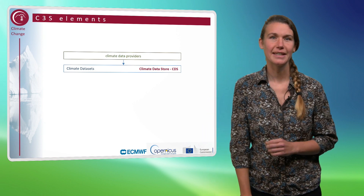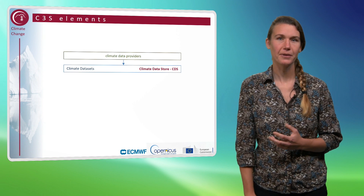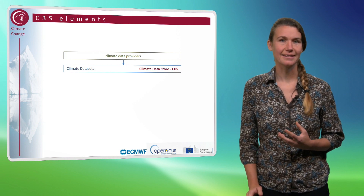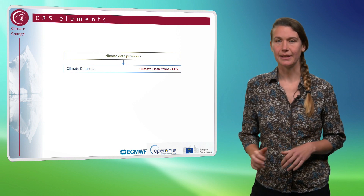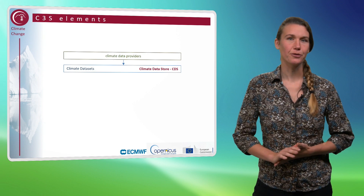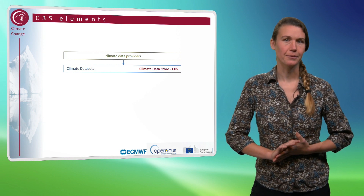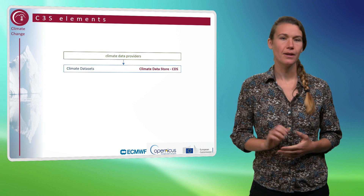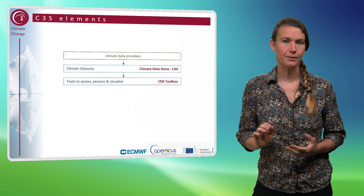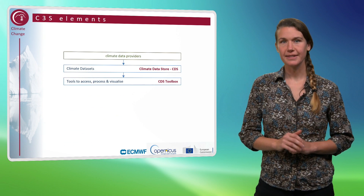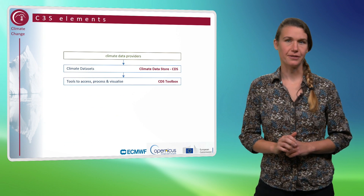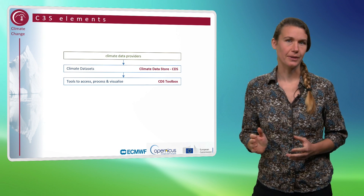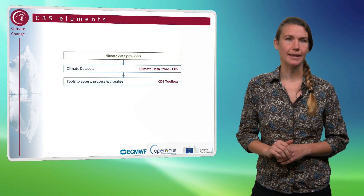Climate data will be disclosed through what we call the Climate Data Store, the CDS. The CDS is the central repository where climate data can be accessed and used. The CDS Toolbox provides a graphical user interface and tools to access, process, and visualize climate data.